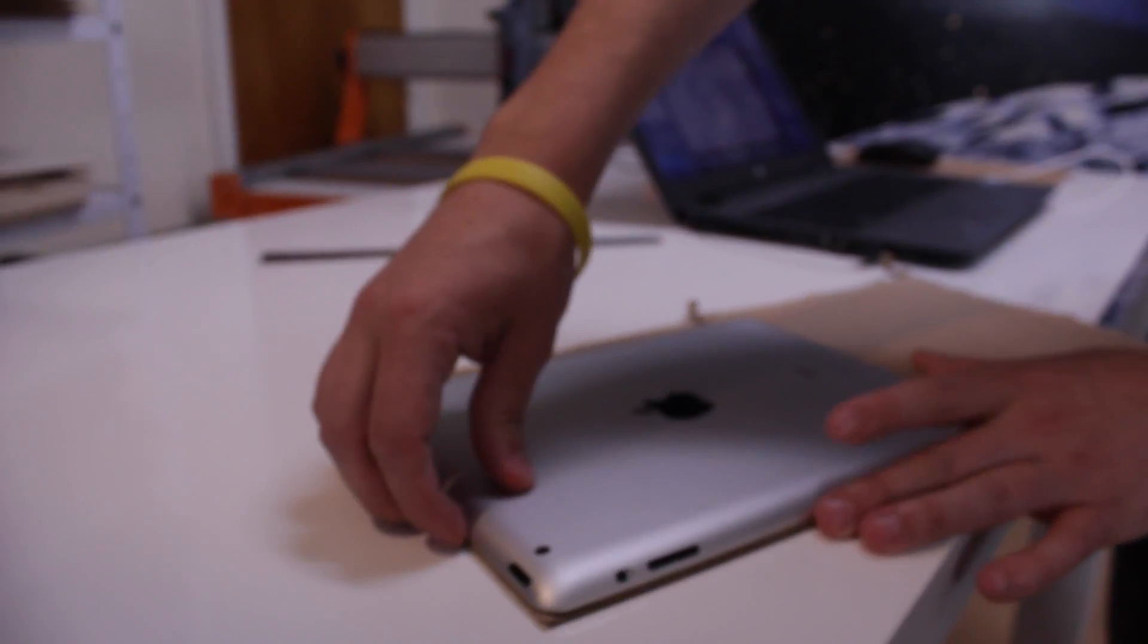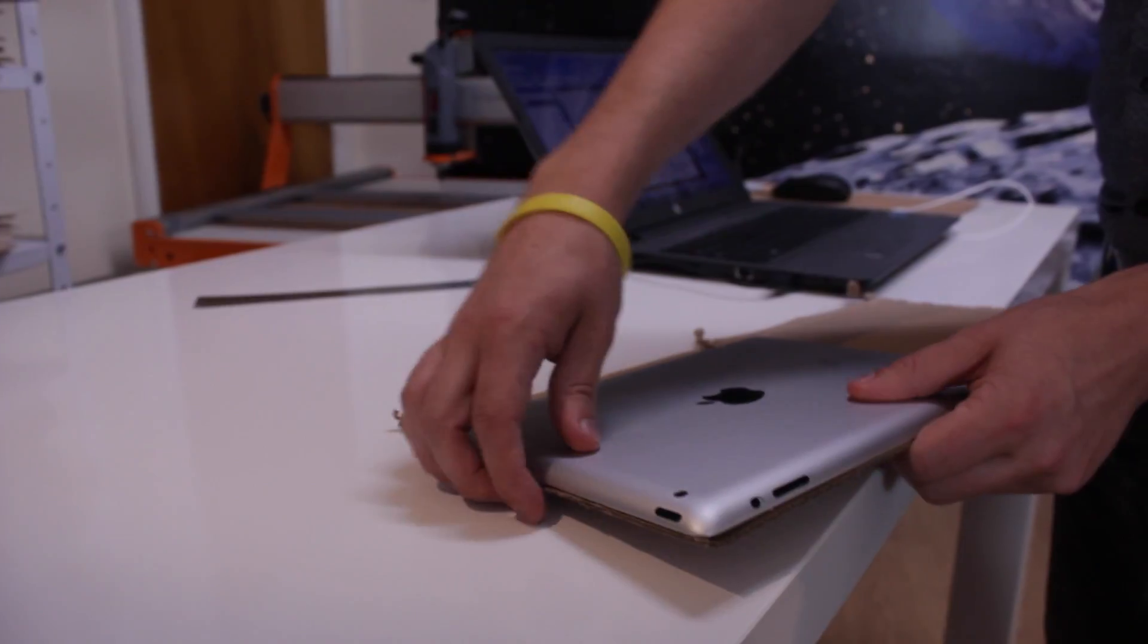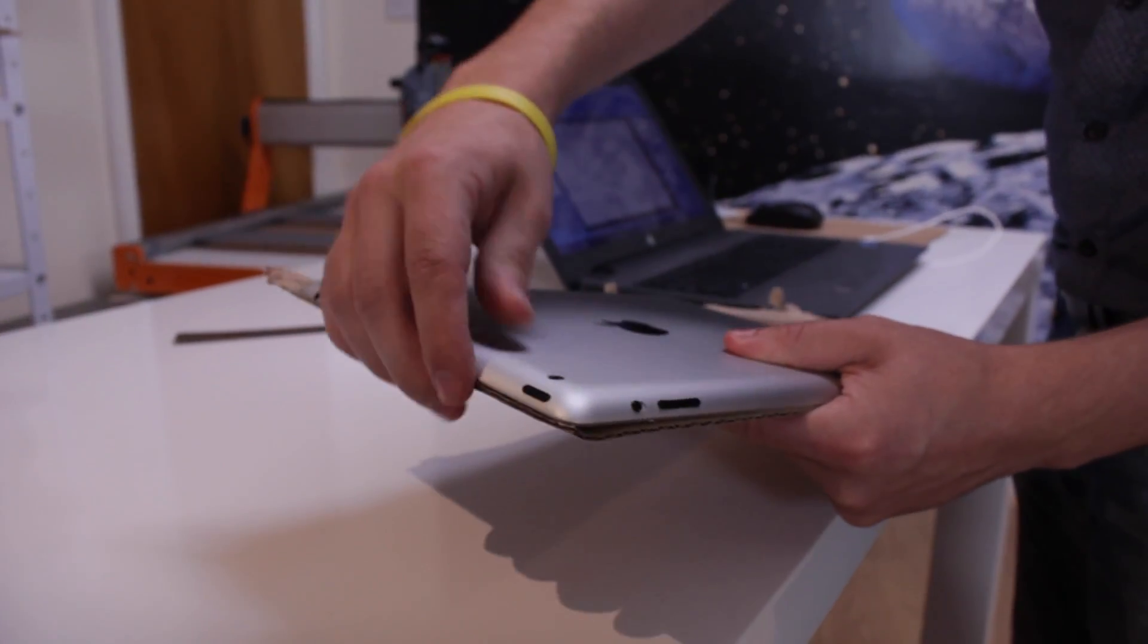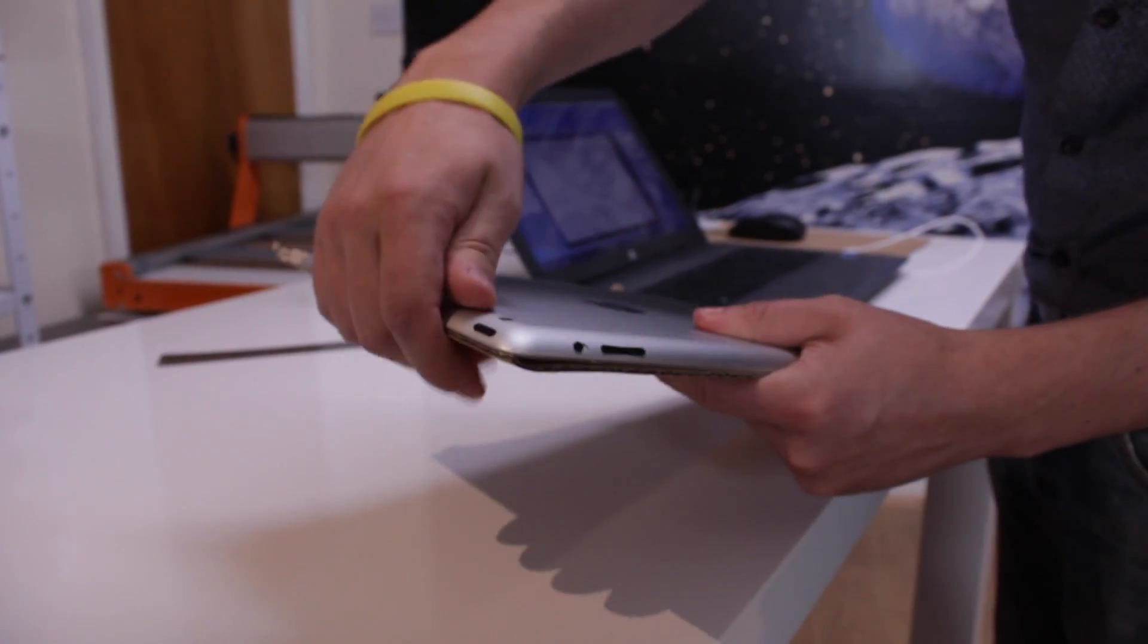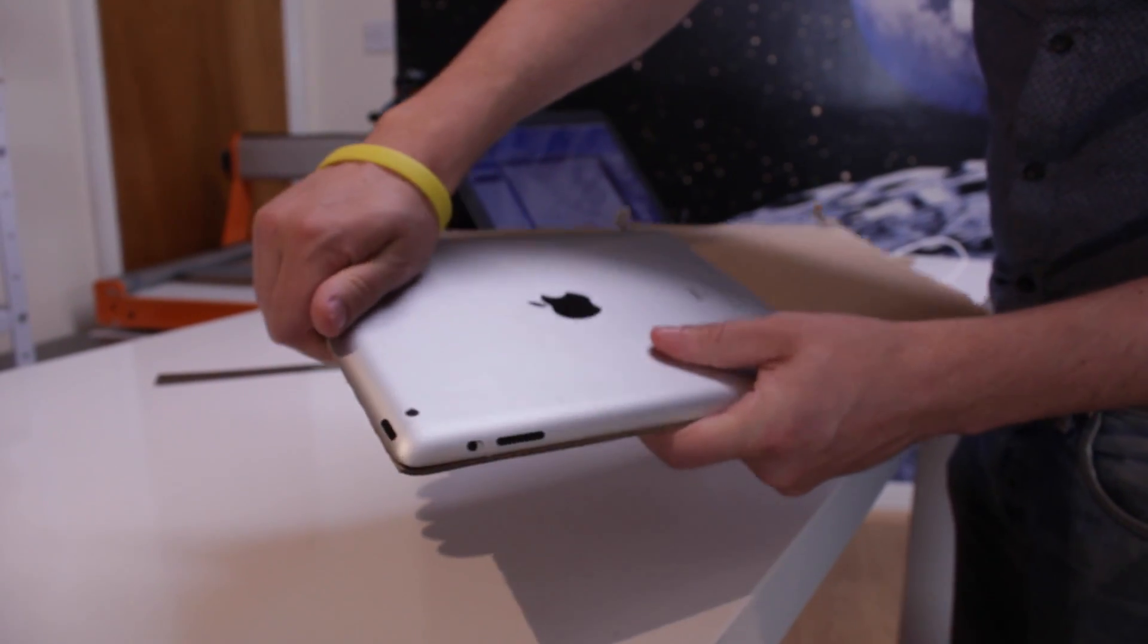If this was a run of jobs, we'd probably use a jig. But all we need here is a square to protect the screen from the bottom of the laser.